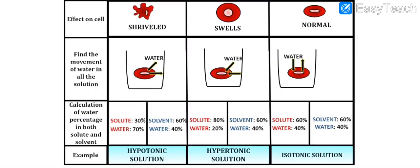Next, we have to discuss different types of solutions. There are three types of osmotic solutions: hypotonic, hypertonic, and isotonic. When we talk about any solution, a solution is made up of solute and water. A solute is something that is added to the water — for example, sugar in water.